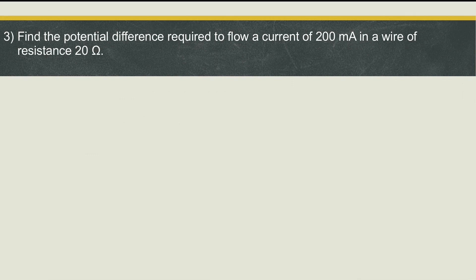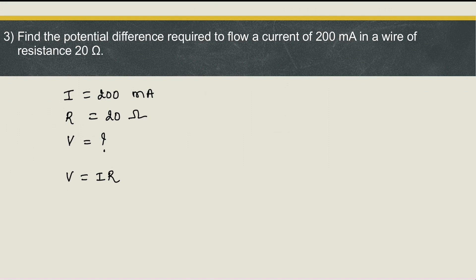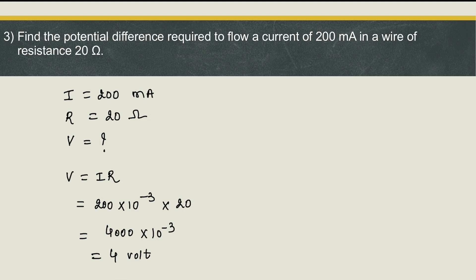Next — this is a very easy question. Find the potential difference required to flow a current of 200 milliampere in a wire of resistance 20 ohm. Current is 200 milliampere, resistance is 20 ohm, and we have to find the potential difference. Using Ohm's law, V = IR: 200 × 10⁻³ × 20 = 4000 × 10⁻³ = 4 volt. So the potential difference required is 4 volt.